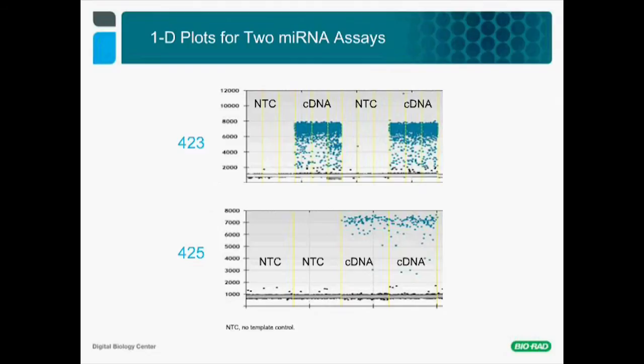ddPCR can be used with commercially available miRNA assays. Here we can see the 1D plot for the detection of miRNAs 423 and 425 using the kit from Life Technologies, which uses a TaqMan assay. In this type of plot, we measure one type of fluorescence on the y-axis. We observe a very nice discrimination between the positive and negative droplets in the samples containing the target cDNA. The controls—NTCs, or no-template controls—do not show a positive population.